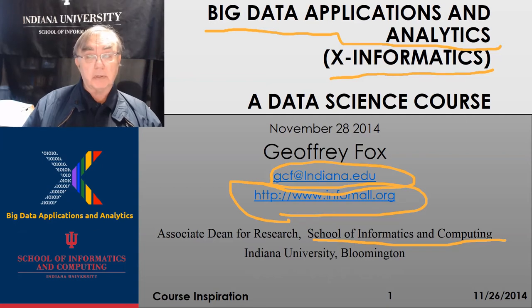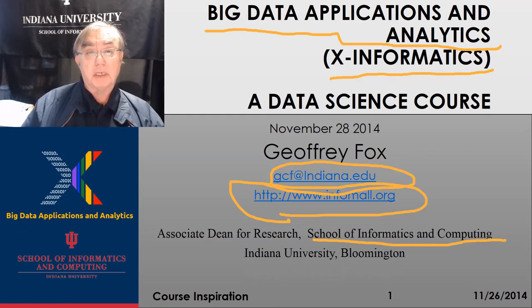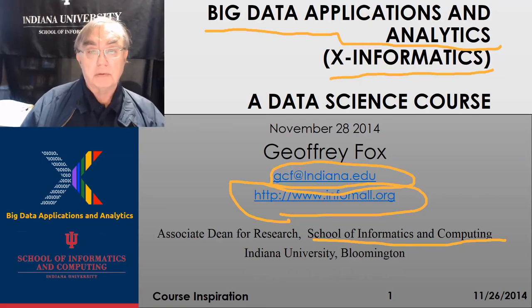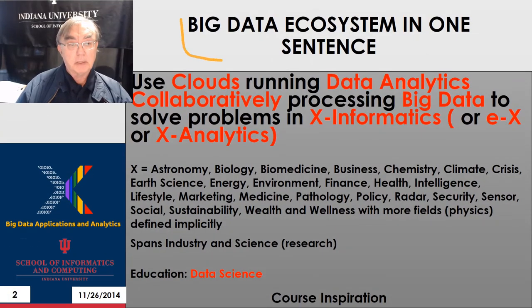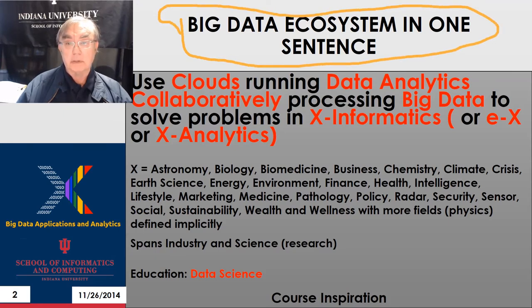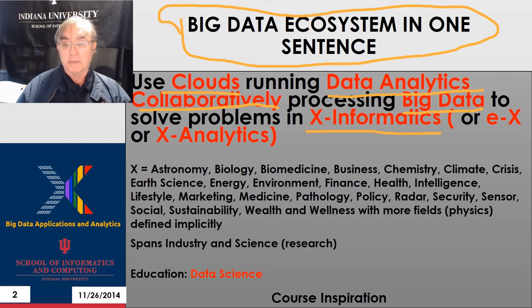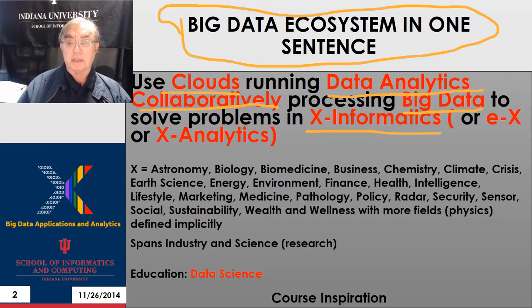This whole course is supported by Google community groups, where students can post their own comments and comment on other people's posts. Those postings are controlled by instructor-suggested topics, and the community groups are also used in the MOOC version to discuss homework in a peer fashion. The essential rallying cry of the course is the big data ecosystem in one sentence: you use clouds, run data analytics, collaborate, and process big data to solve problems in X-informatics — for example, sports informatics is closely related to sports analytics.